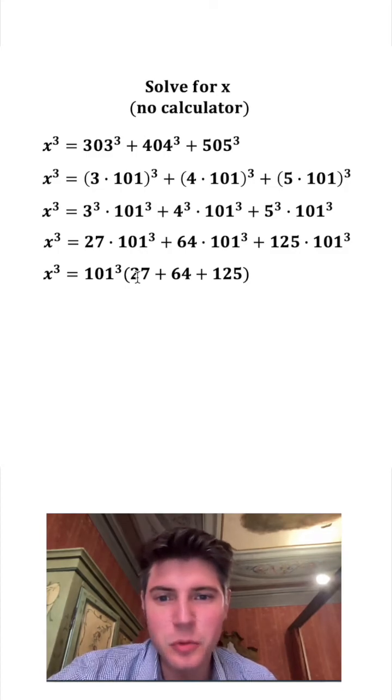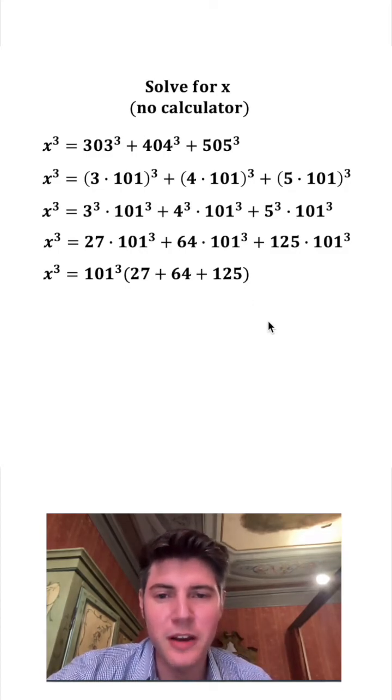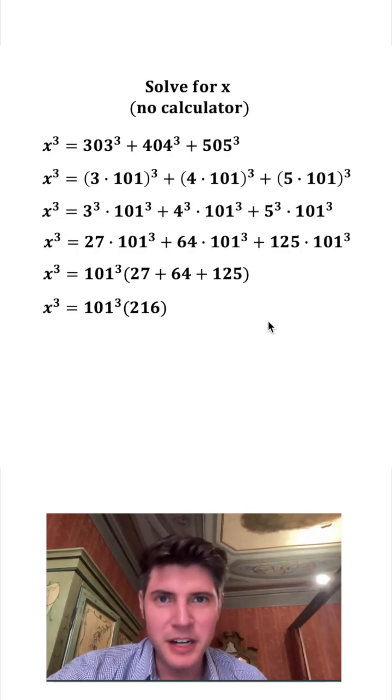So now let's clean up inside of the parentheses. 27 plus 64 plus 125 is equal to 216, and let's bring down everything else.